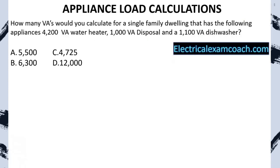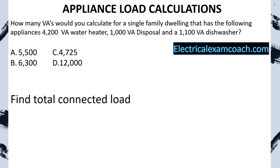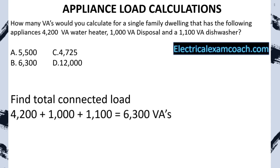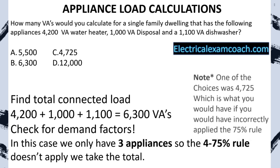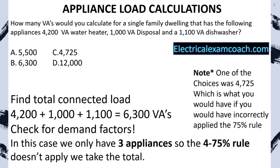Practice problem: How many VAs would you calculate for a single-family dwelling with a 4,200 VA water heater, a 1,000 VA disposal, and a 1,100 VA dishwasher? First, find the total connected load: totaling all up equals 6,300 VAs. Now check for demand factors — we only have three appliances, so the four-or-more 75% rule does not apply. We take the total connected load at 6,300. Note that one of the answer choices was as if you incorrectly applied the 75% rule — because we only have three, we don't apply any demand factor at all.